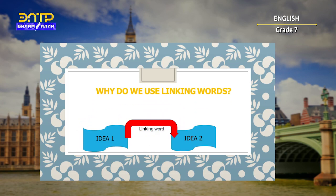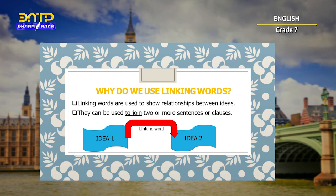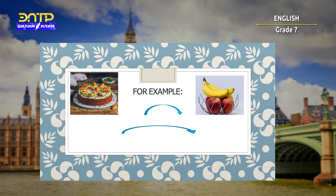Why do we use linking words? Linking words are used to show relationships between ideas or sentences. They can be used to join two or more sentences or clauses. See the picture — we've got idea 1 and idea 2, and between them we can put a linking word. For example: I like apples and bananas. It is an addition linking word.